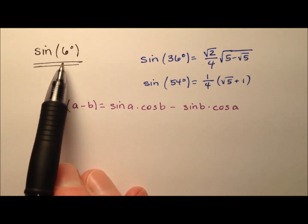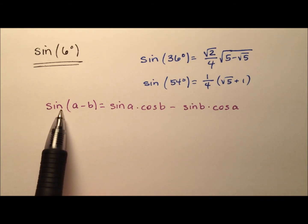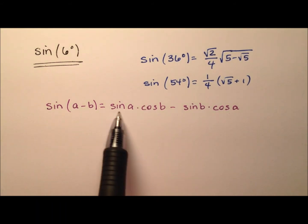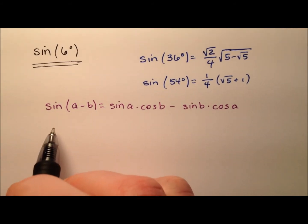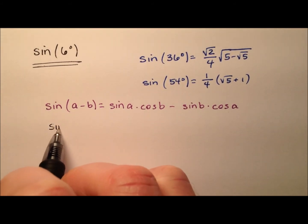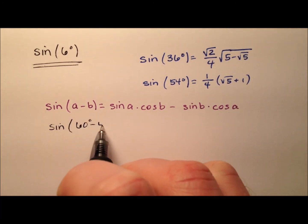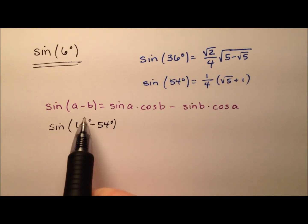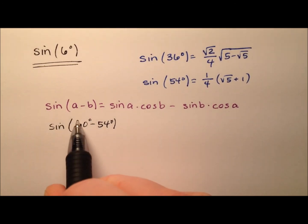I'm going to find the sine of six degrees by using the difference formula for sine. So it looks like we need four values here, and so we need A and B. The A and the B value that we're going to use, we're going to use 60 degrees minus 54 degrees. And of course, 60 minus 54 is our six degrees.